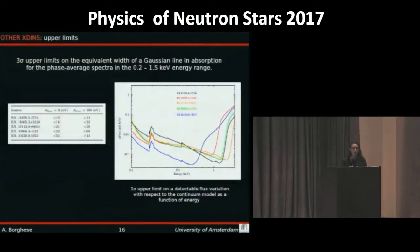For the other X-DINs, we derived the 3-sigma upper limit for the presence of a Gaussian line in absorption for the phase average spectra with a width of zero eV, that means narrower than the energy resolution of the instrument, in this case the EPIC-PN camera, and with a width of 100 eV. Here on the plot is the 3-sigma upper limit on a detectable flux variation with respect to the continuum model as a function of energy, and this can be related to the detectability of a feature in the spectra.